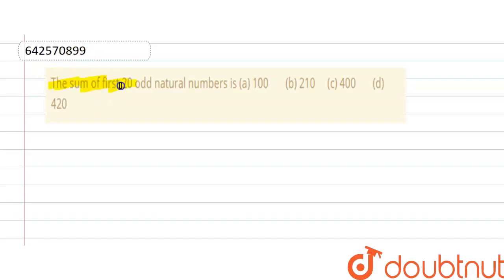The sum of the first 20 odd natural numbers is: (a) 100, (b) 210, (c) 400, (d) 420. Let's start. The first odd natural numbers are 1, 3, 5, 9... up to the 20th odd natural number, which is 49.